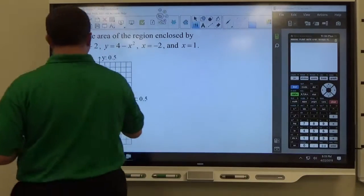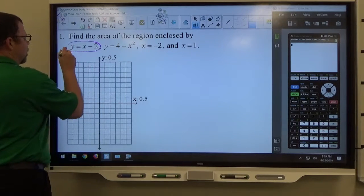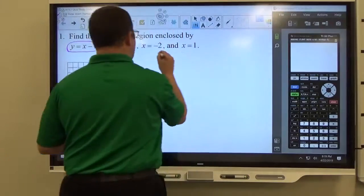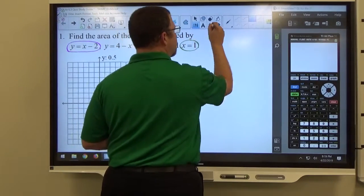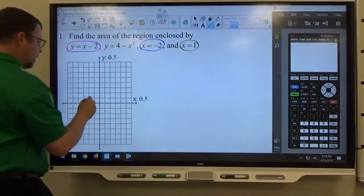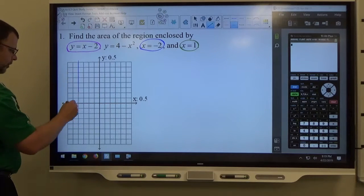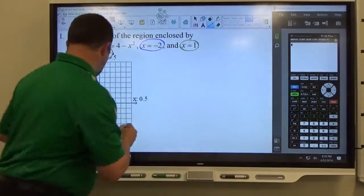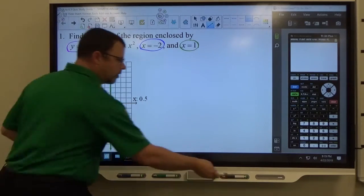So if I start by graphing these objects, let's pretend we don't have knowledge about where they intersect. Let's start with the two vertical lines that are really easy to graph, x equals negative 2 and x equals positive 1. So x equals negative 2, we've got a half scale here, so negative 1, negative 2 would be right here. And if we want to graph x equals 1, 0.5, 1, that would be about right here.